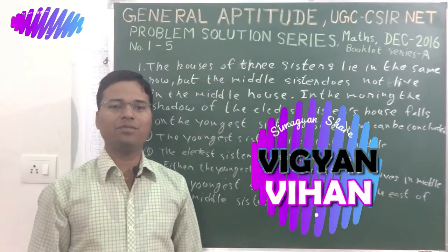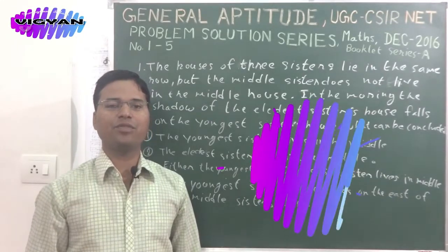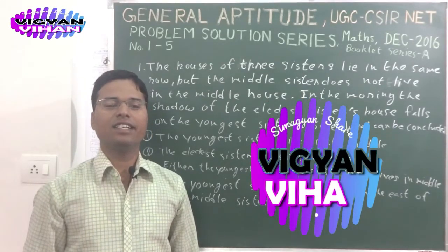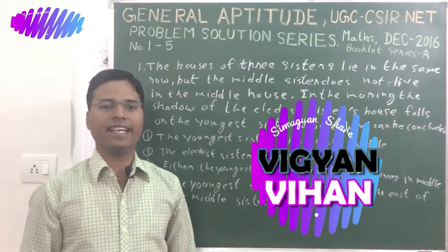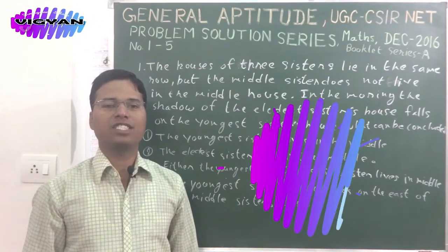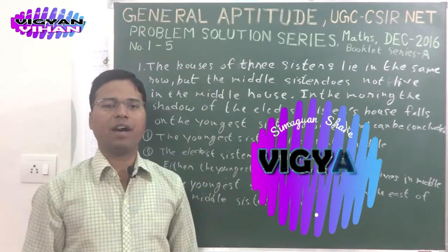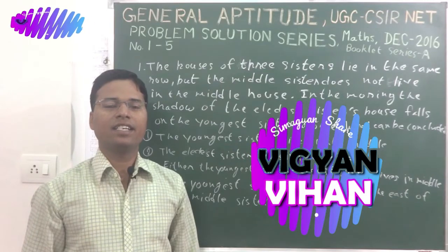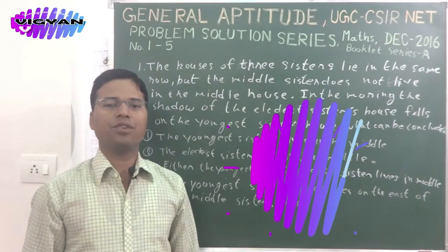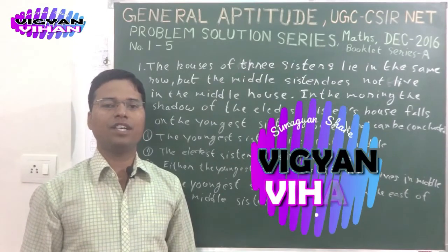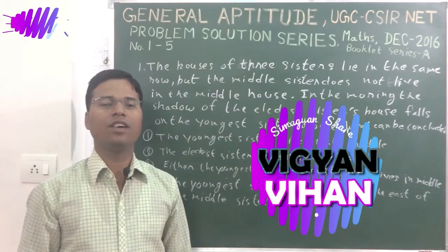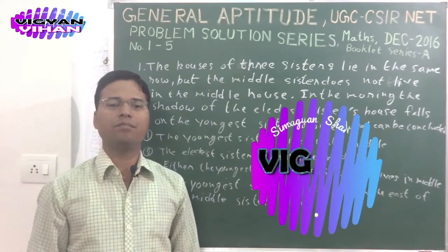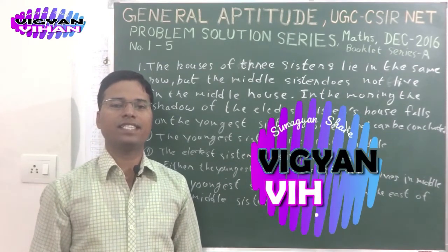Good morning friends, I welcome you all at your favorite YouTube channel Vigyan Vihana. This is our problem solution series for general aptitude part A of UGC CSIR NET. In this episode, we will solve problem number 125 of mathematical sciences paper of December 2016.